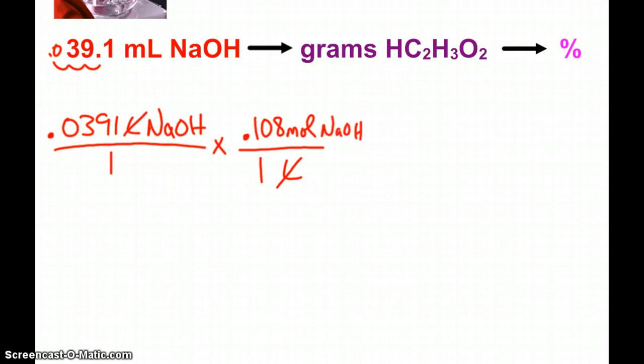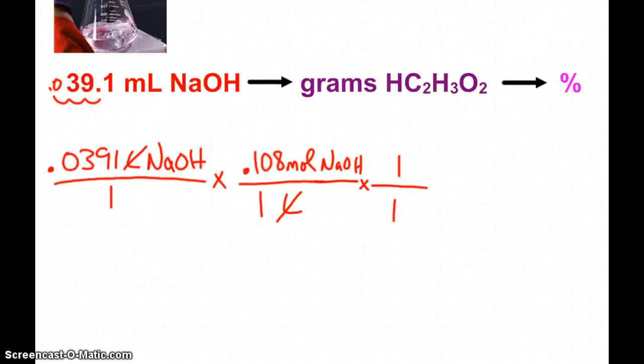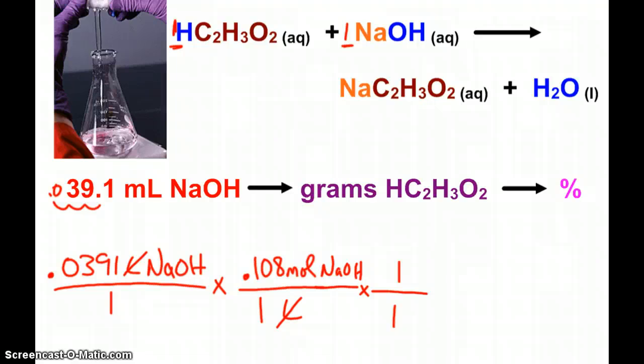And now what I want to do is change from sodium hydroxide to acetic acid. And that, as I mentioned before, was a 1 to 1 ratio from our balanced equation up here.